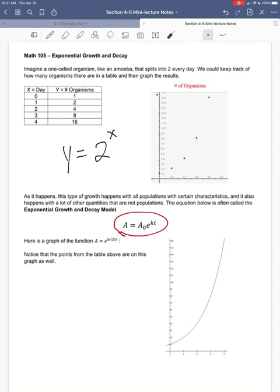We've got A equals A sub zero times e to the kt power. A here is sort of standing just for amount. So the amount of some quantity that's present is equal to this function here on the right-hand side.